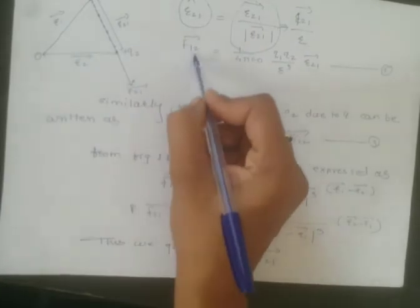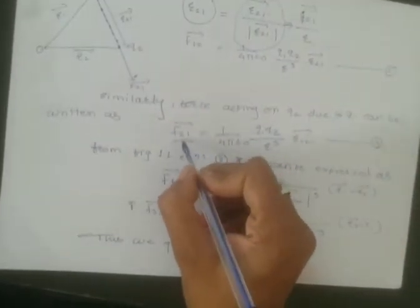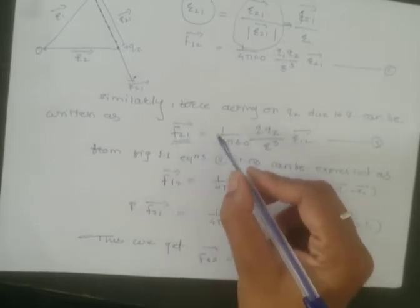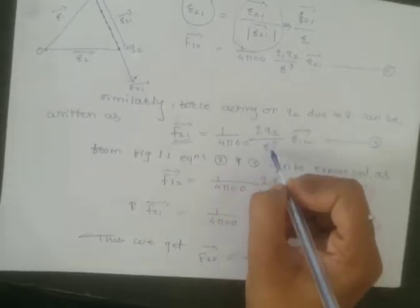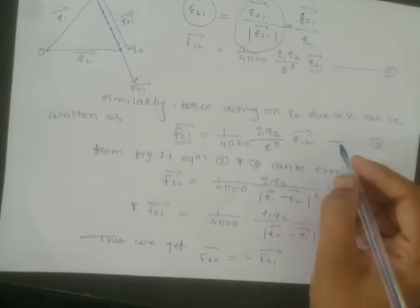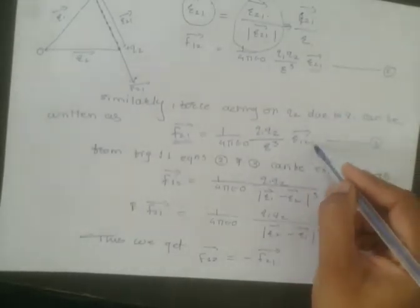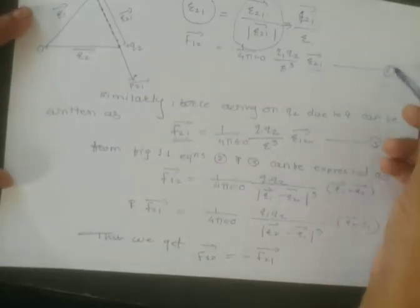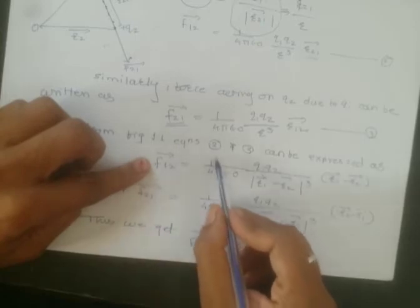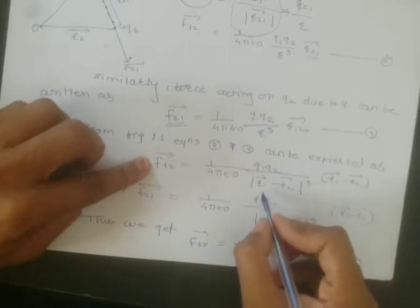Now I am going to express the force acting on q2 due to q1. Since it is the force acting on q1 due to q2, the force acting on q2 due to q1 is F₂₁ = (1/4πε₀) · q1·q2 / r³ · r₁₂. The direction is reversed, so r₁₂ appears here. The force on q1 due to q2 can be expressed as (1/4πε₀) · q1·q2 / |r₁ − r₂|³ · (r₁ − r₂).